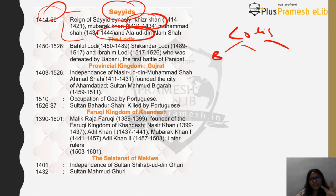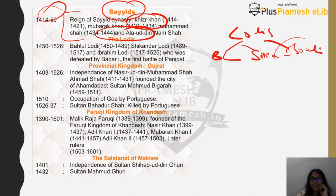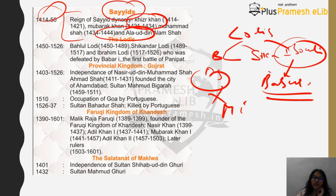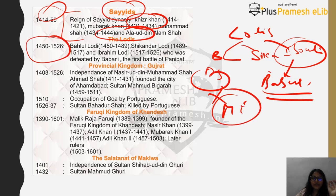After the Sayyads came the Lodhis. In Lodhis you need to remember three names: Bahlul Lodi, who established the Lodhi dynasty, then Sikandar Lodi, and then Ibrahim Lodi — the same Ibrahim Lodi who had to fight the war with Babur. He lost that war, which was the First Battle of Panipat, and finally the Delhi Sultanate came to an end and the Mughal Empire began.